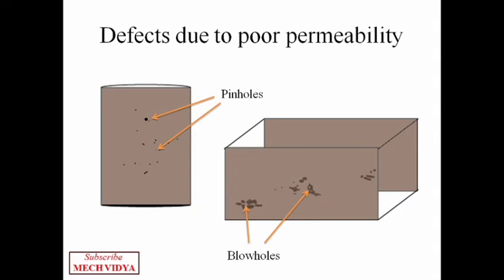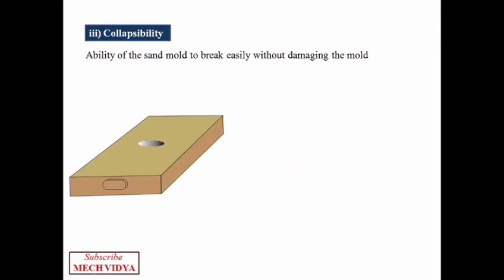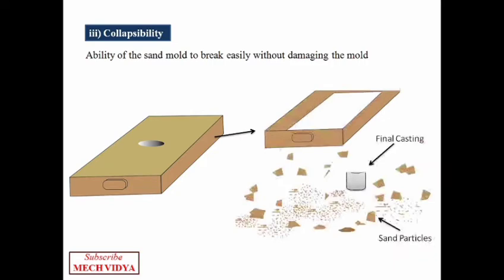Next property is collapsibility. When molten metal solidifies inside the mold cavity, in order to take it out we need to break the sand mold. So ideally we want that the mold should break easily without causing any harm to the metal casting. This is called the collapsibility of that particular molding sand.